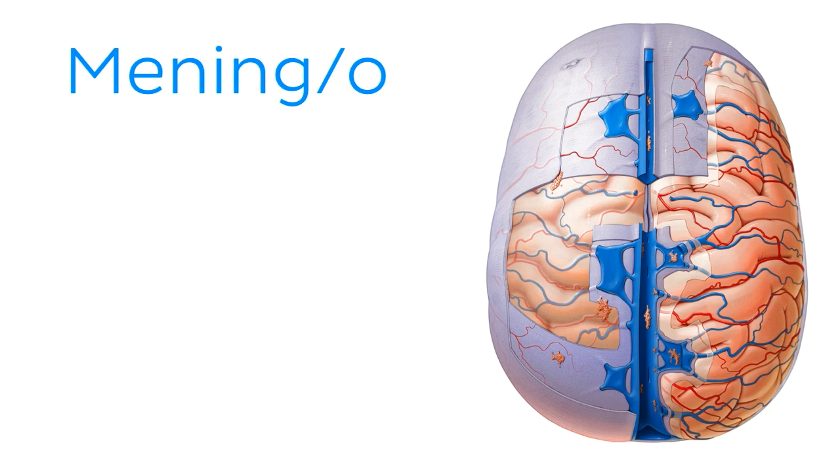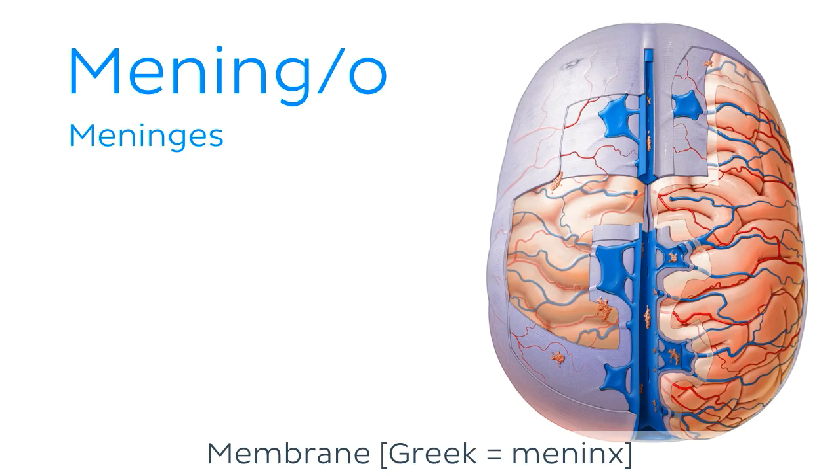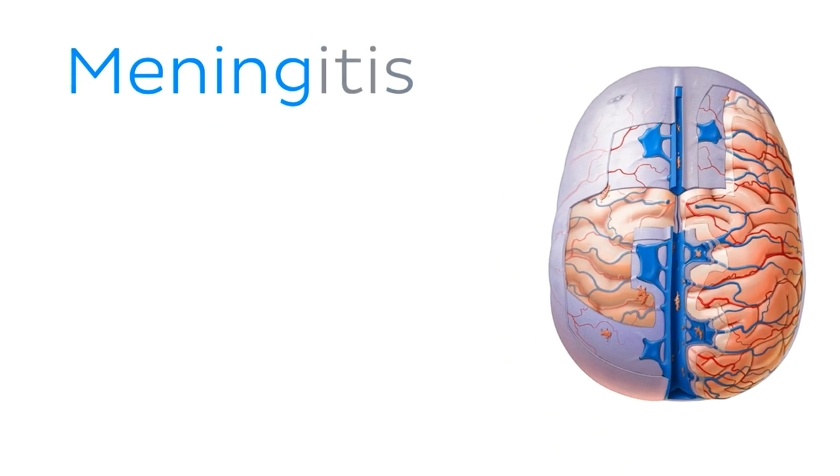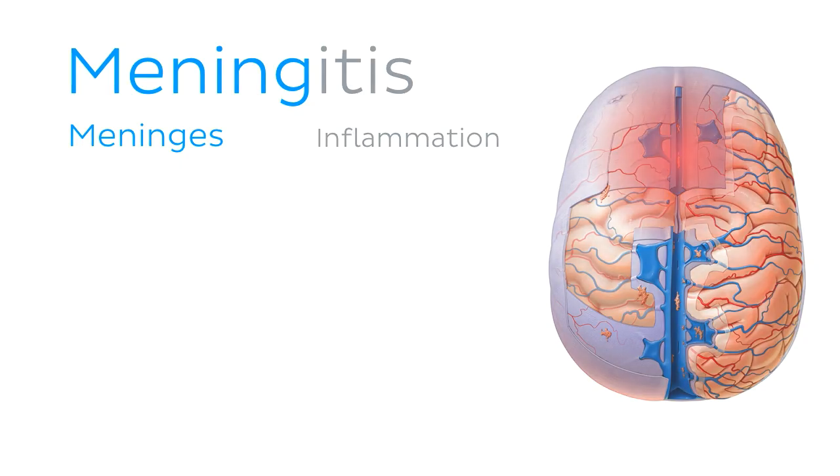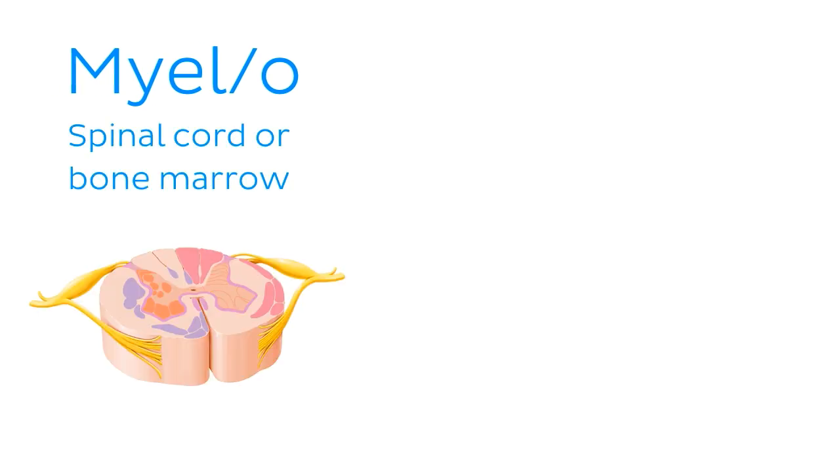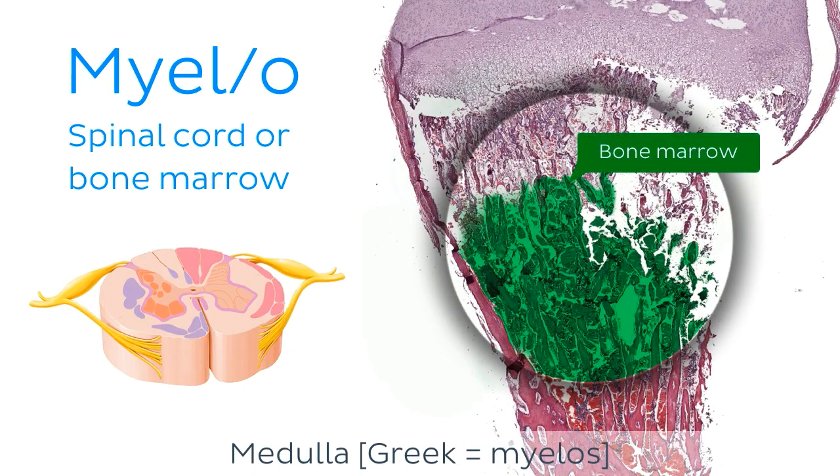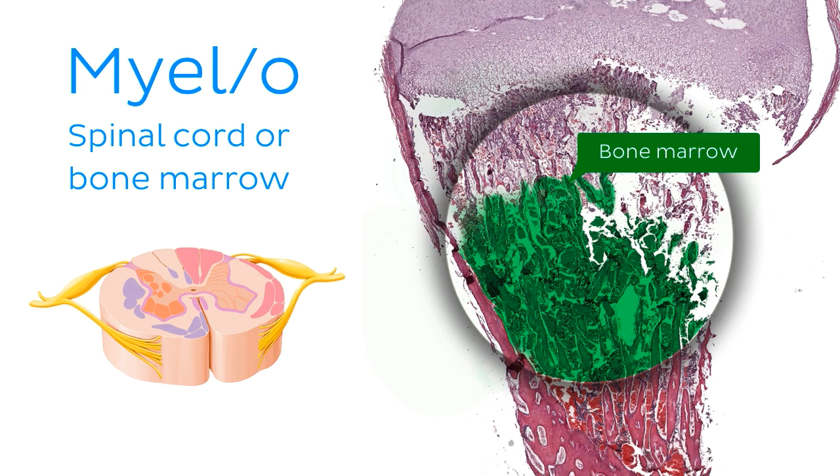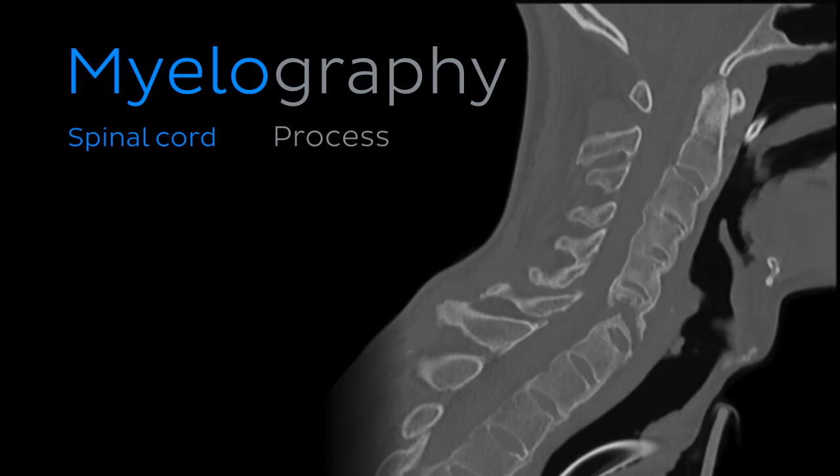Mening or meningo, as you might have guessed, refers to the membranes surrounding the brain and spinal cord, known as the meninges. We all know the term meningitis, a condition which causes inflammation of the meninges. Next up is perhaps a less well-known root, myel or myelo, which can refer to either the spinal cord or bone marrow. It comes from the Greek word myelos, which means medulla, or innermost part of a structure. An example of this root in action would be myelography, the process of taking radiological images of the spinal cord.